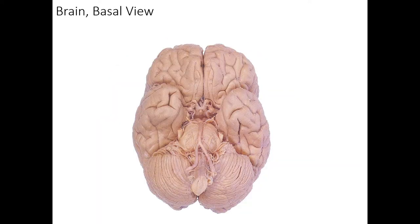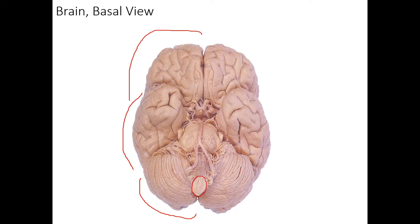So here we have a basal view of the brain. We can see the frontal cortex, the temporal cortex, the cerebellum, the brainstem, the spinal cord going up to the medulla, and the vertebral arteries, the basilar artery, etc.